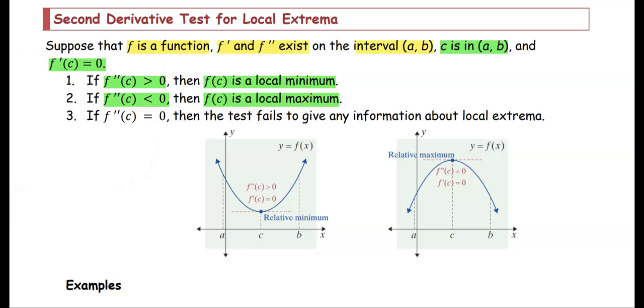If f double prime equals zero, then the test fails to give any information about local extrema.